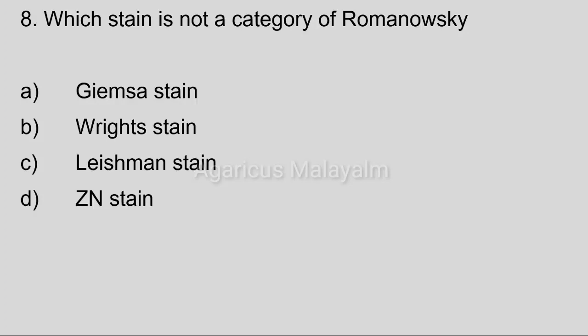Eighth question — important question: Which stain is not a category of Romanowski? Option A: Giemsa stain. Option B: Wright stain. Option C: Leishman stain. Option D: Sudan stain. Correct answer: Option D, Sudan stain.